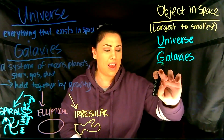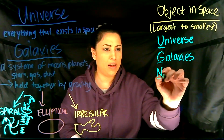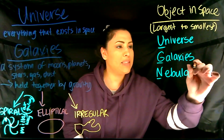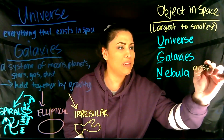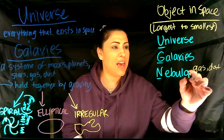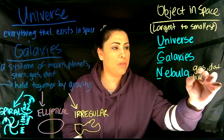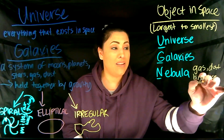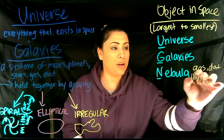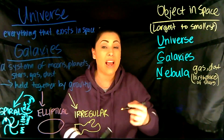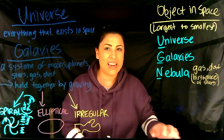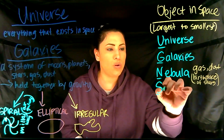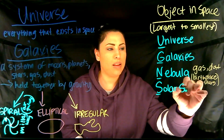Next we have galaxies, and then we have a nebula. What is a nebula? It's made of gas and dust, and it is actually the birthplace of stars — this is where stars are made. All stars start as a nebula. Nebula — it's kind of a fun word to say!